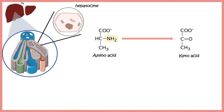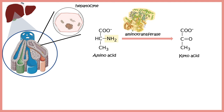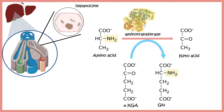Transamination is an amine group transfer reaction. The amine group is transferred with the help of aminotransferases, and the amine group acceptor is alpha-ketoglutaric acid. Alpha-ketoglutaric acid accepts the amine group from the amino acid and itself gets converted to glutamate. So from different amino acids, the amine group is funneled in the form of glutamate, and the key enzyme is aminotransferase.